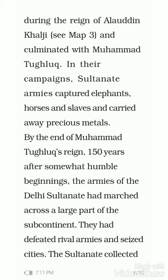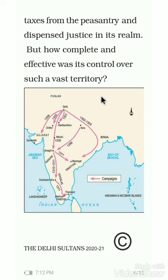Alauddin Khalji did not rule the south directly — he only collected tribute and left local rulers in place. But when Muhammad bin Tughlaq campaigned there he captured the area and became the direct ruler. That is why, under Muhammad bin Tughlaq, the Delhi Sultanate became very large, as you can see on the map — only Kashmir and Odisha remained outside his control.